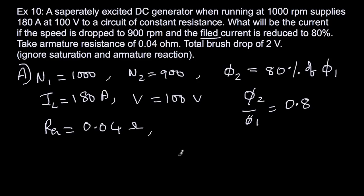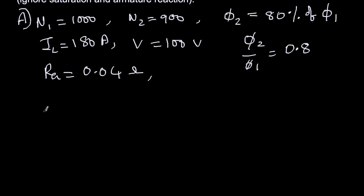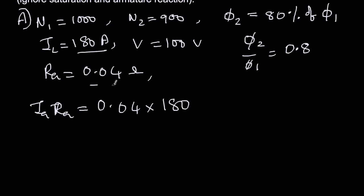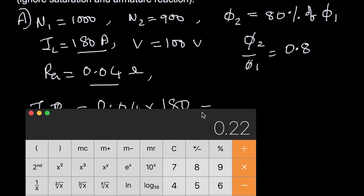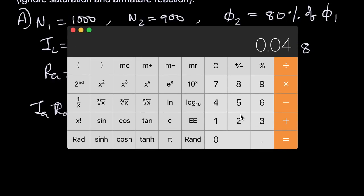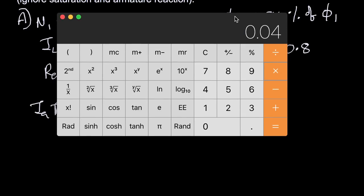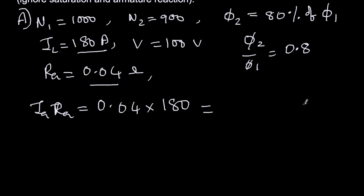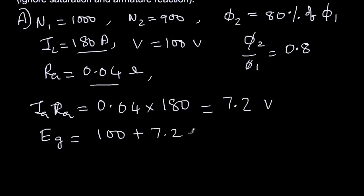First find EG1: I_A × R_A = 180 × 0.04 = 7.2 volts. Brush drop is 2 volts. So EG1 = 100 + 7.2 + 2 = 109.2 volts. Since EG is proportional to φ × N, we have EG1/EG2 = (φ1 × N1)/(φ2 × N2). With φ2/φ1 = 0.8 and N2/N1 = 900/1000, EG2 = EG1 × (φ2/φ1) × (N2/N1) = 109.2 × 0.8 × 900/1000 = 78.624 volts.